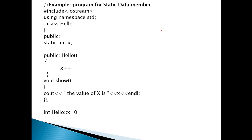Program for static data member. We have preprocessor include iostream, using namespace std, and we have class Hello. In this class, we have taken a data member x and declared it as static. Then we have a constructor named Hello, and inside the constructor, we increment x by one using x++.